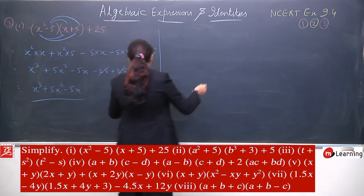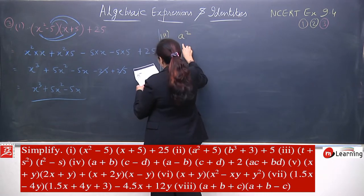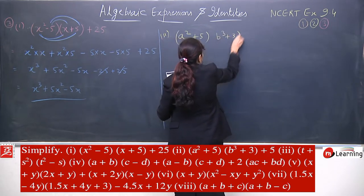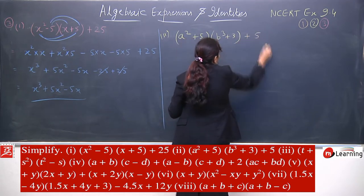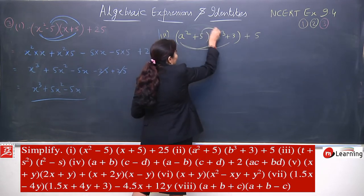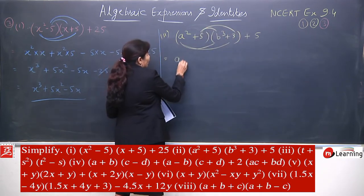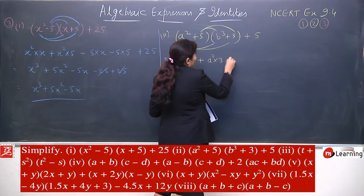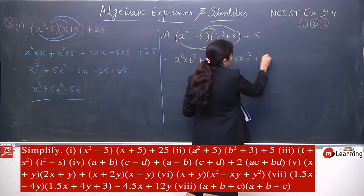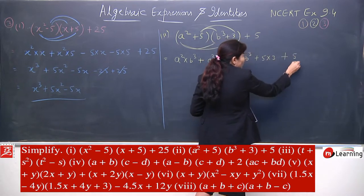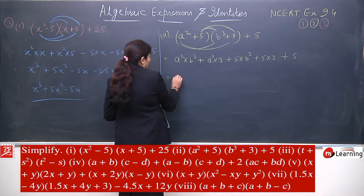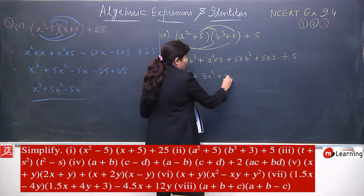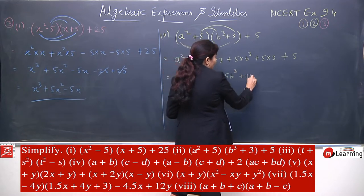Now the second part is: a square plus 5, b cube plus 3, and then 5. Same procedure — multiply each and every term. So a square multiplied by b cube, plus a square multiplied by 3, plus a square, plus 5 into b cube, plus 5 into 3, and the extra term plus 5.